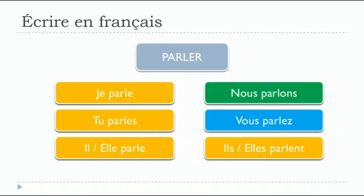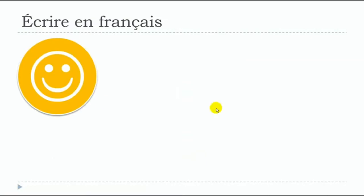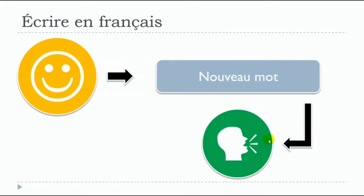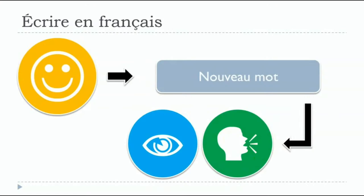This is basically the difficult thing about French: the big difference between what you say and what you write. For this verb, there are actually only three phonetical forms: parle, parlons, and parlez. But if you want to write correctly, you must remember the endings and put the S or ENT even if you pronounce them the same way. My advice: when you see a new word — a verb, adjective, or noun — try to remember not only how to pronounce it, but also how to write it correctly.